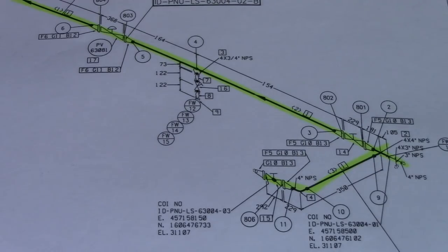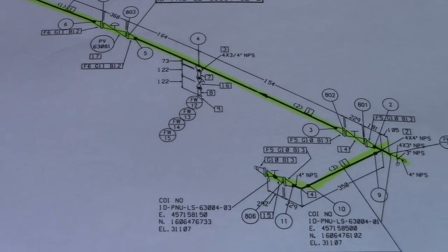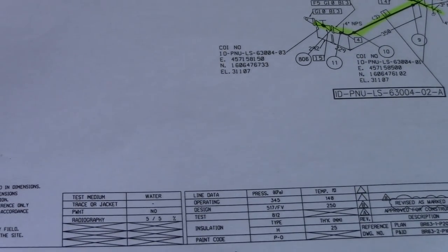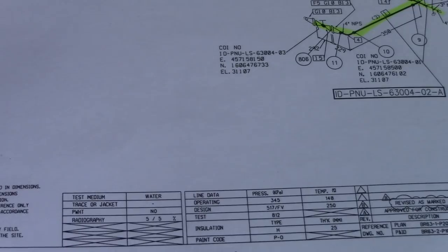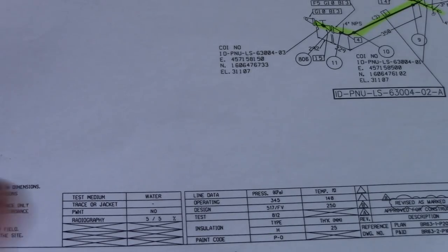Number ten is design. We will see this here in the table — what is the design of this isometric drawing, operating pressure and testing. Number eleven is operating and test pressures.